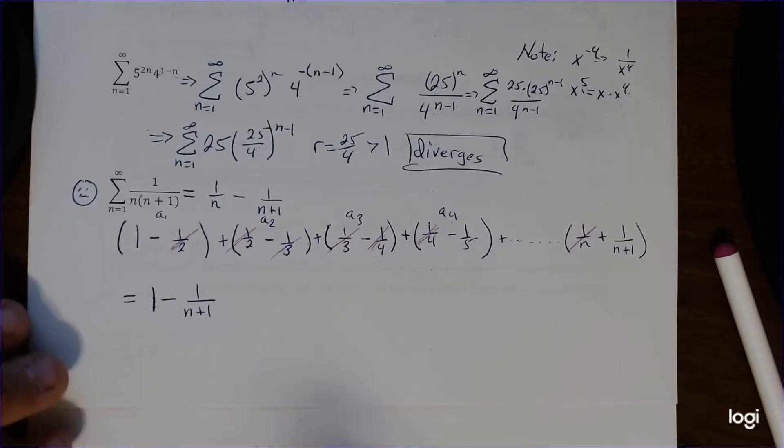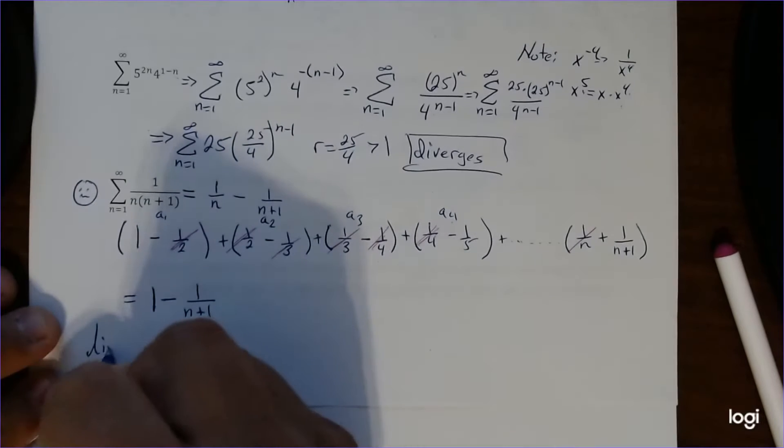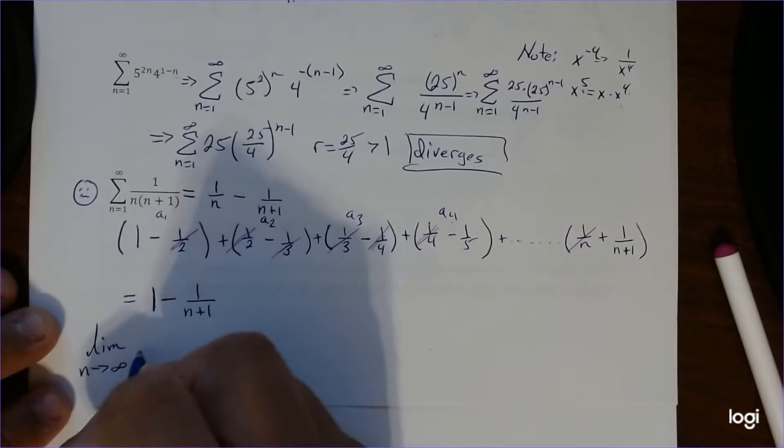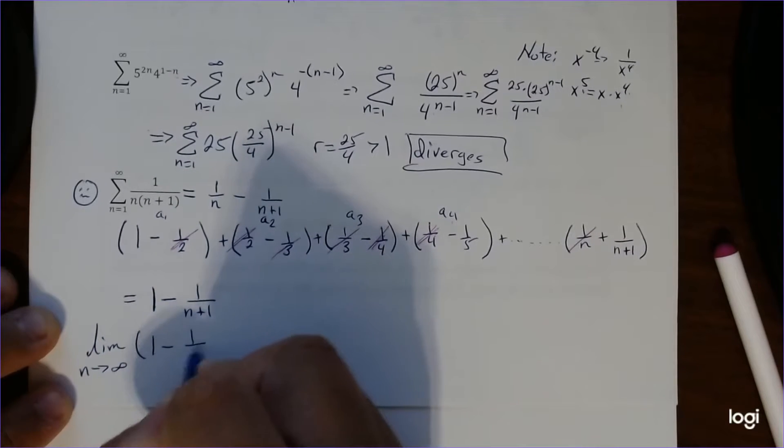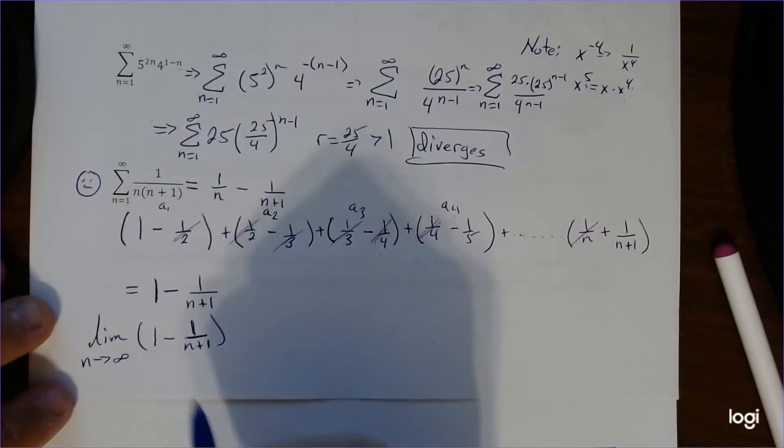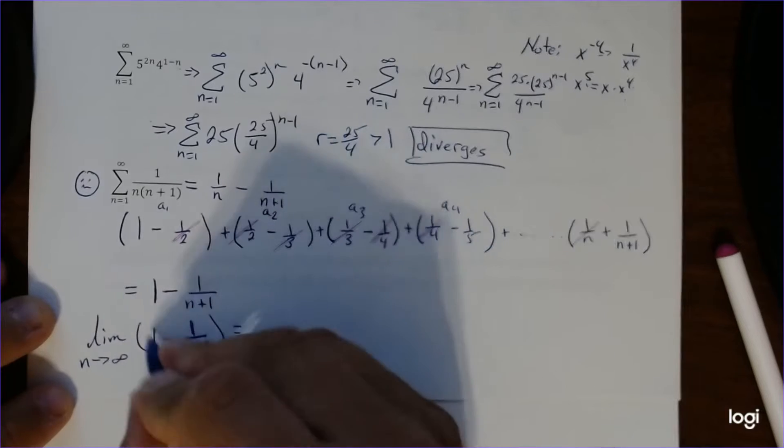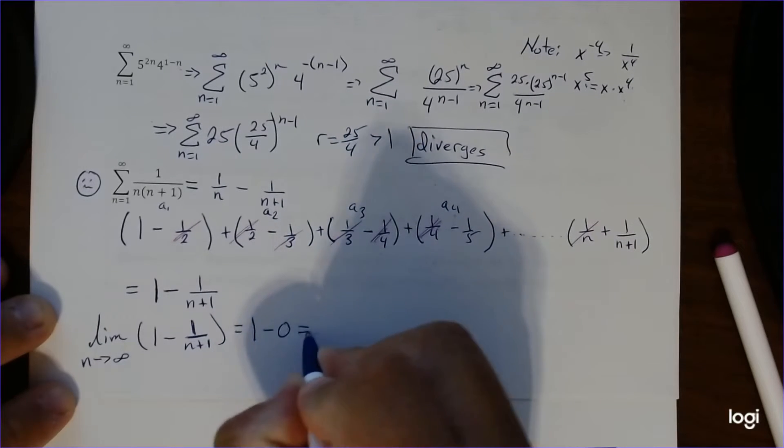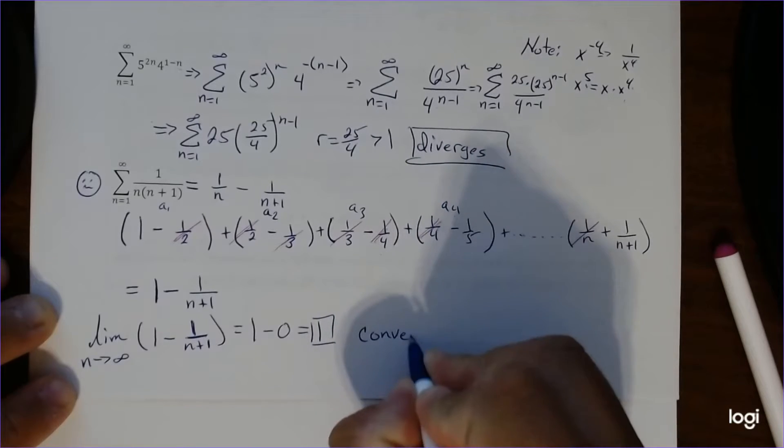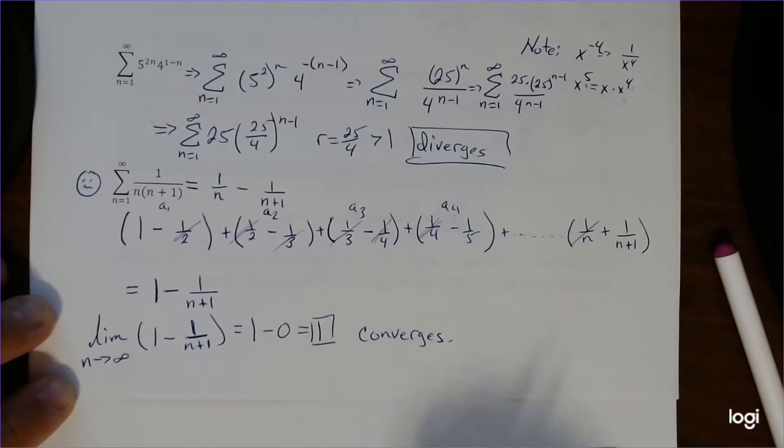And now if we take the limit as n goes to infinity of these two sums here. Well, this goes to 0, and this is just 1. So this 1 minus 0 gives you 1. So this converges as well.